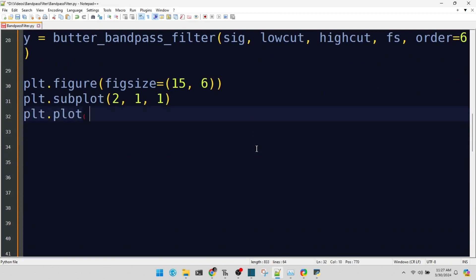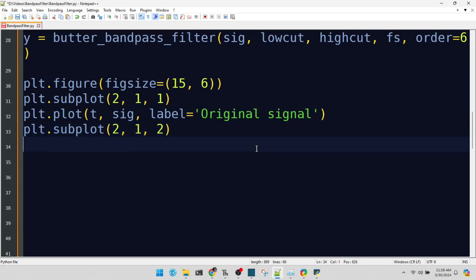And now, the moment we've been waiting for, the filtered signal. Plotting the filtered signal. Notice how the frequencies outside the 30-300 Hz range are significantly reduced or gone. That's the power of bandpass filtering.